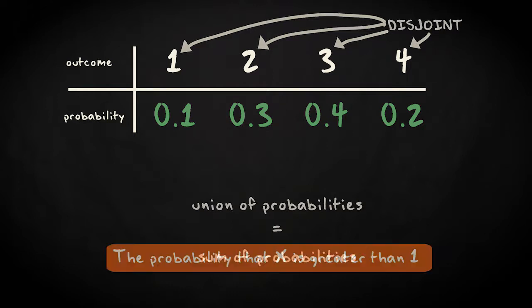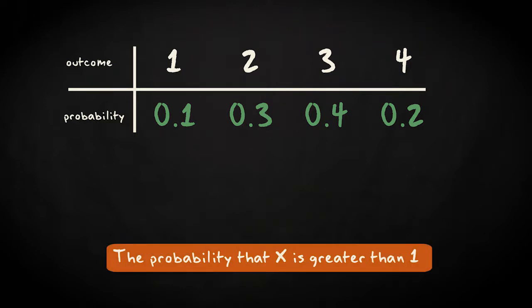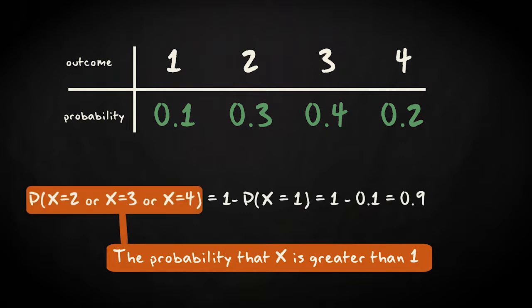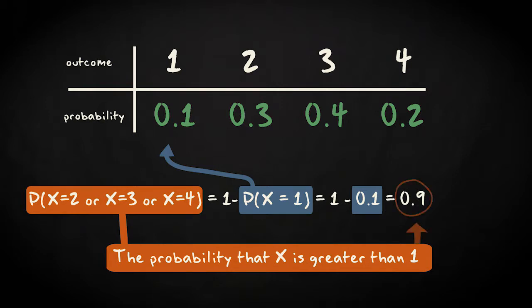Similarly, the probability that x is greater than 1 is equal to 1 minus the probability that x is 1, which is 0.9 by the complement rule.